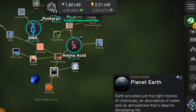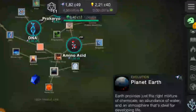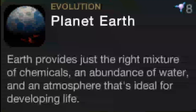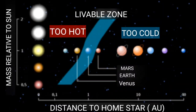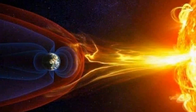Earth provides just the right mixture of chemicals, an abundance of water, and an atmosphere that's ideal for developing life. Currently, the earth is the only example of an environment that allows evolution to continue. The earth provides the necessary conditions such as water, an environment in which complex organic molecules can be synthesized, and enough energy for metabolism.